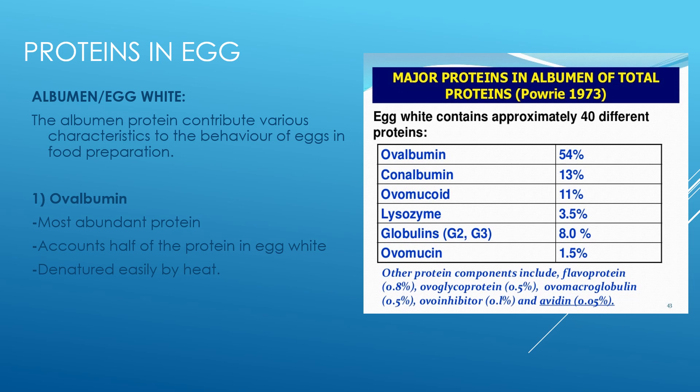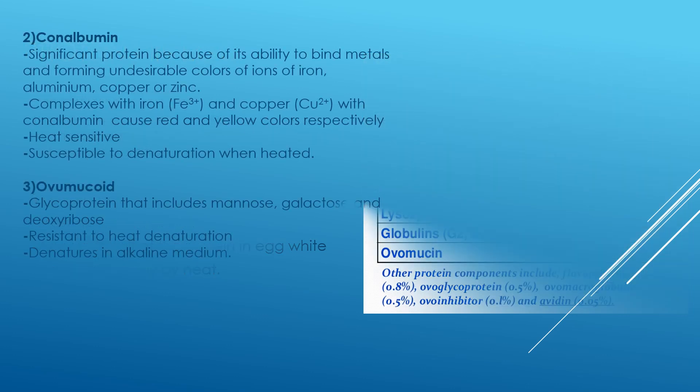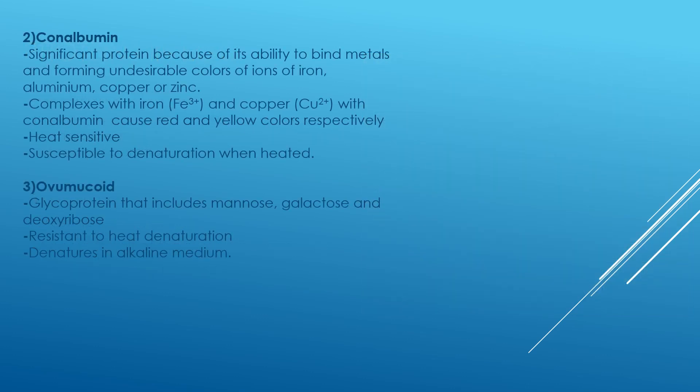Ovalbumin is the most abundant protein present in egg white — it accounts for half of the protein in egg white. It is denatured easily by heat. Conalbumin is a significant protein because of its ability to bind metals, forming undesirable colors with ions of iron, aluminium, copper, or zinc. Complexes with iron and copper cause red and yellow colors respectively. Conalbumin is heat sensitive and susceptible to denaturation when heated.